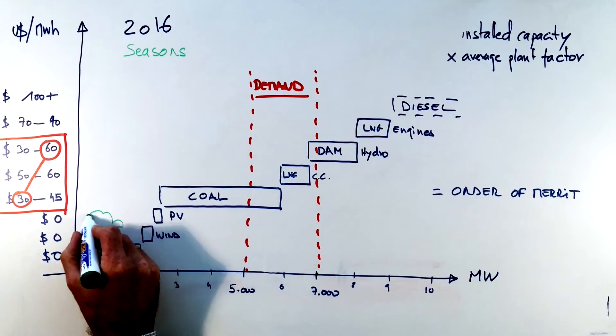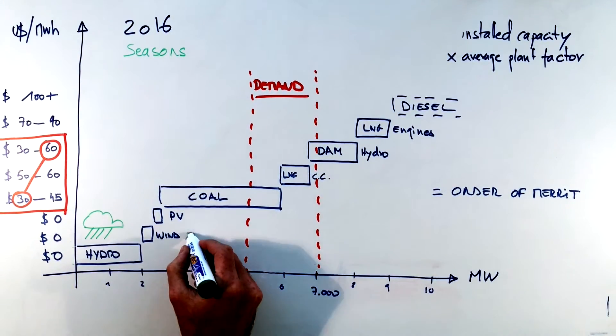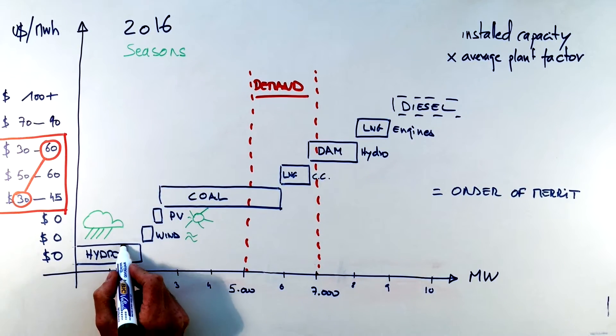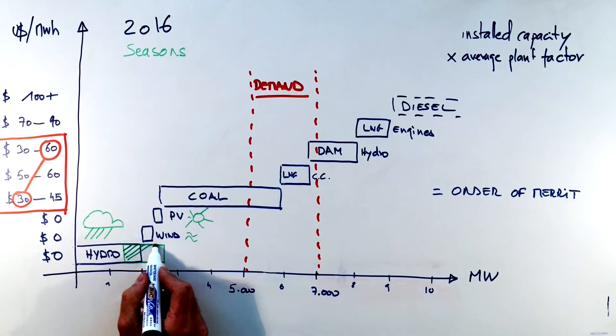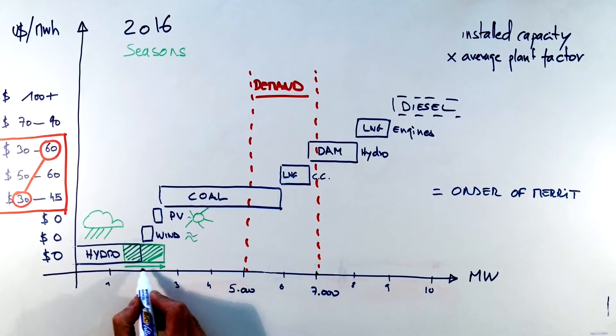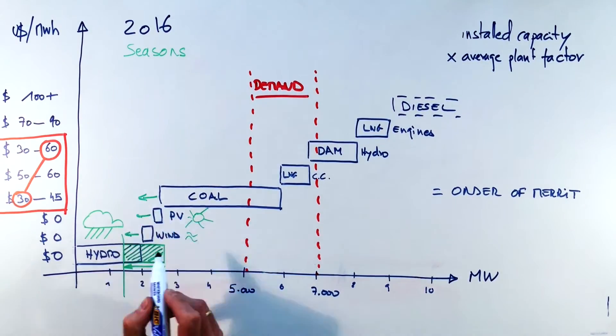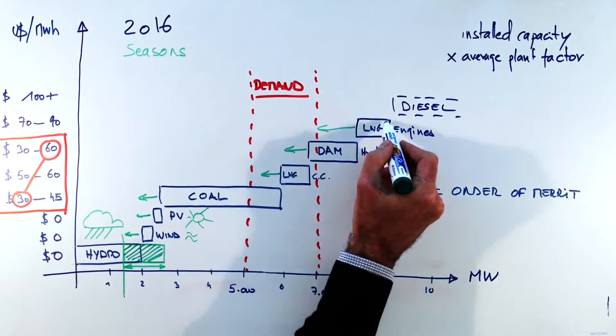If we now look at seasons we can see that seasons have an influence on hydro, PV and wind but mainly on hydro which is the main oscillator. Hydro is going to be varying between 1,500 and 2,500 depending on the rain that falls in Chile and this is going to have an impact on all the other technologies.